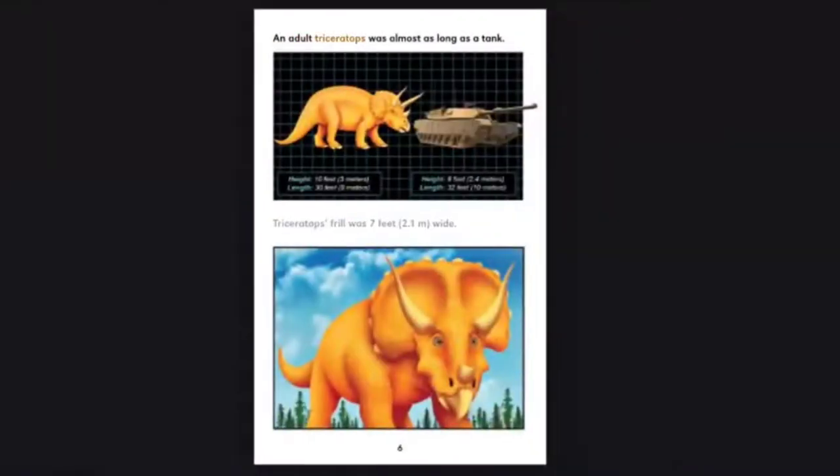An adult Triceratops was almost as long as a tank. Height: 10 feet, 3 meters. Length: 30 feet, 9 meters. Height: 8 feet, 2.4 meters. Length: 32 feet, 10 meters.